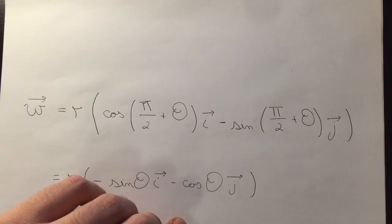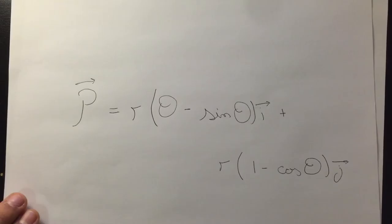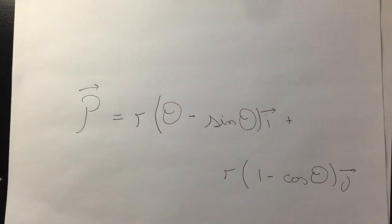From these observations, we can now conclude and write that vector p is equal to r theta minus sin theta vector i plus r 1 minus cos theta vector j.